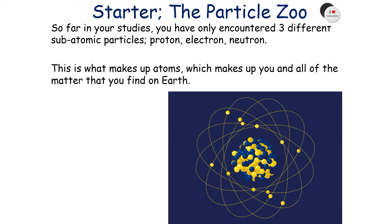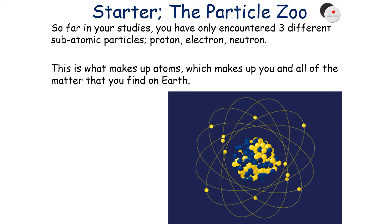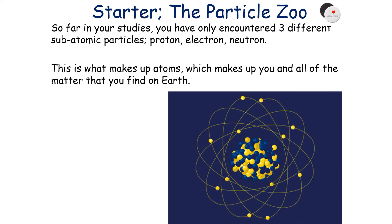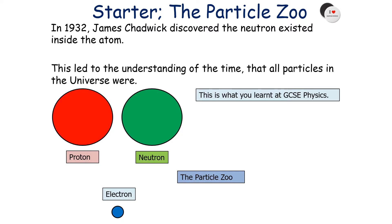So far in your studies, you've encountered three different subatomic particles: the proton, the electron, and the neutron. This is what makes up atoms, which makes up all of the matter that you find on Earth. This understanding was finalised in 1932 when James Chadwick discovered the neutron existed inside the atom, leading to the understanding that all particles in the universe were the proton, the neutron, and the electron — which is what you learn at GCSE physics.